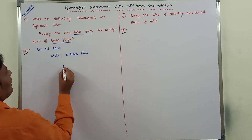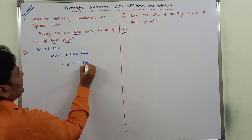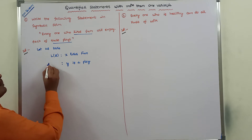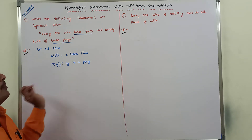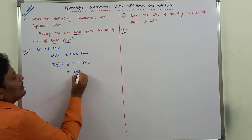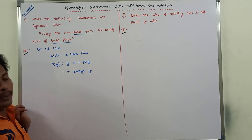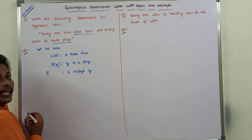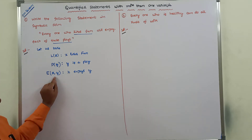Next, 'y is a play' — here 'is a play' is the predicate and y is the subject. The predicate can be denoted by P and the subject by y, written as P(y). Third, 'x enjoys y' — here x and y are two subjects and 'enjoys' is the predicate, denoted by capital E. This is written as E(x, y), with the two subjects separated by a comma.